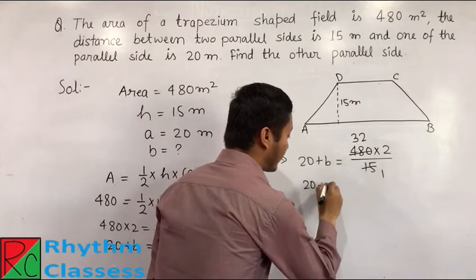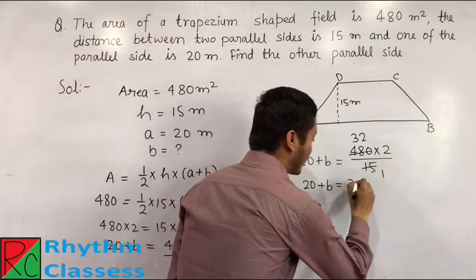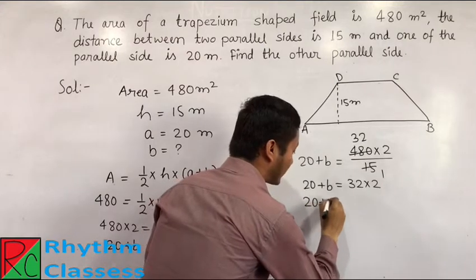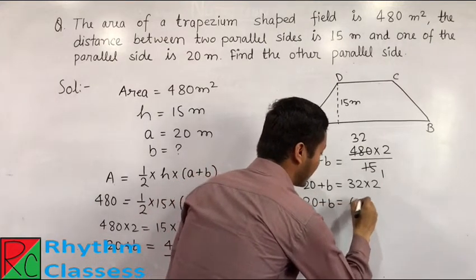Now, it becomes 20 plus B is equal to 32 into 2. Now, finally, it becomes 20 plus B is equal to 64.